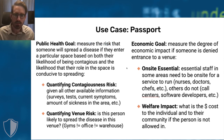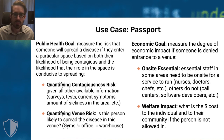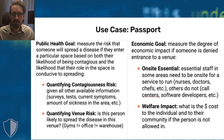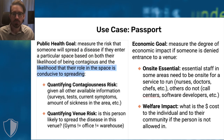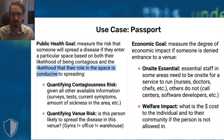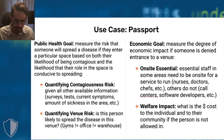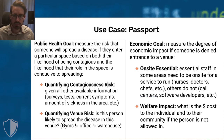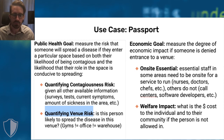The goal of passport technology is to measure the risk that someone will spread the disease if they enter a space, and make decisions based on that risk. We measure this risk based on two things: the likelihood that someone is contagious, and the likelihood that their role in that space is conducive to spreading. For example, a truck driver isn't coming into contact with many people, but someone flipping burgers is coming into contact with loads of ways to potentially spread it.